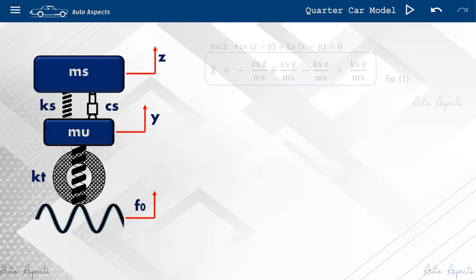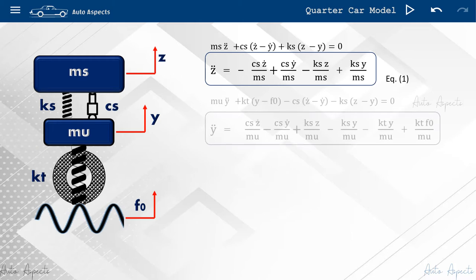With respect to the sprung mass, the equation of motion can be written as displayed, which can be re-written as an acceleration quantity as displayed in equation 1. Similarly, equation 2 is written for unsprung mass.